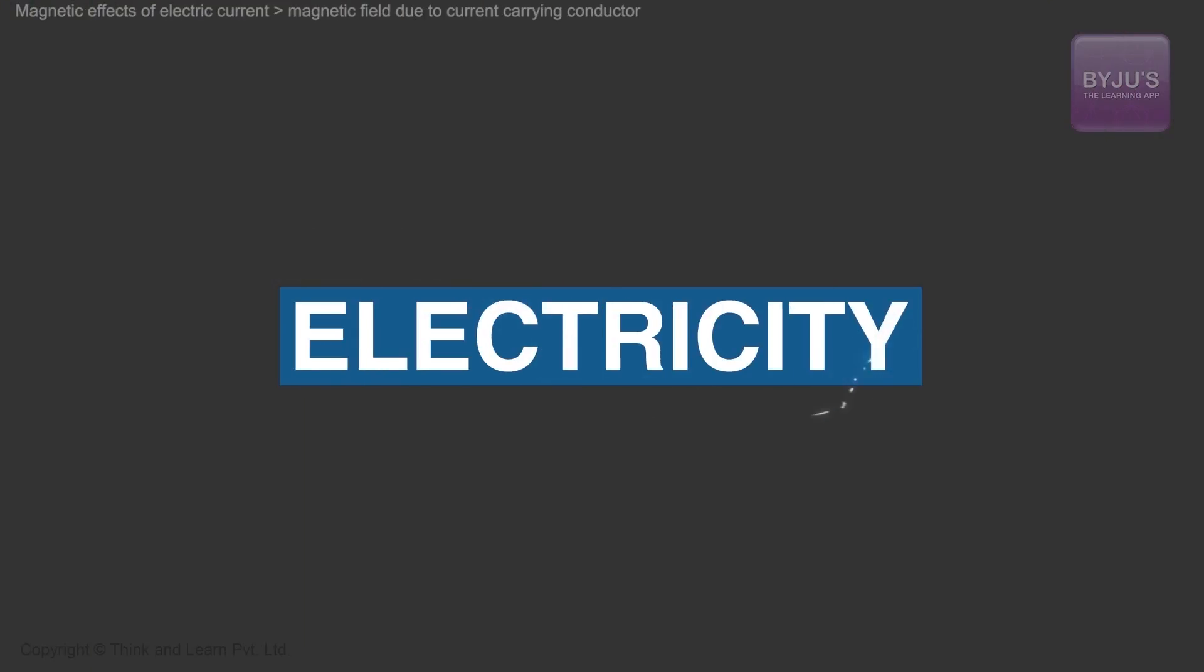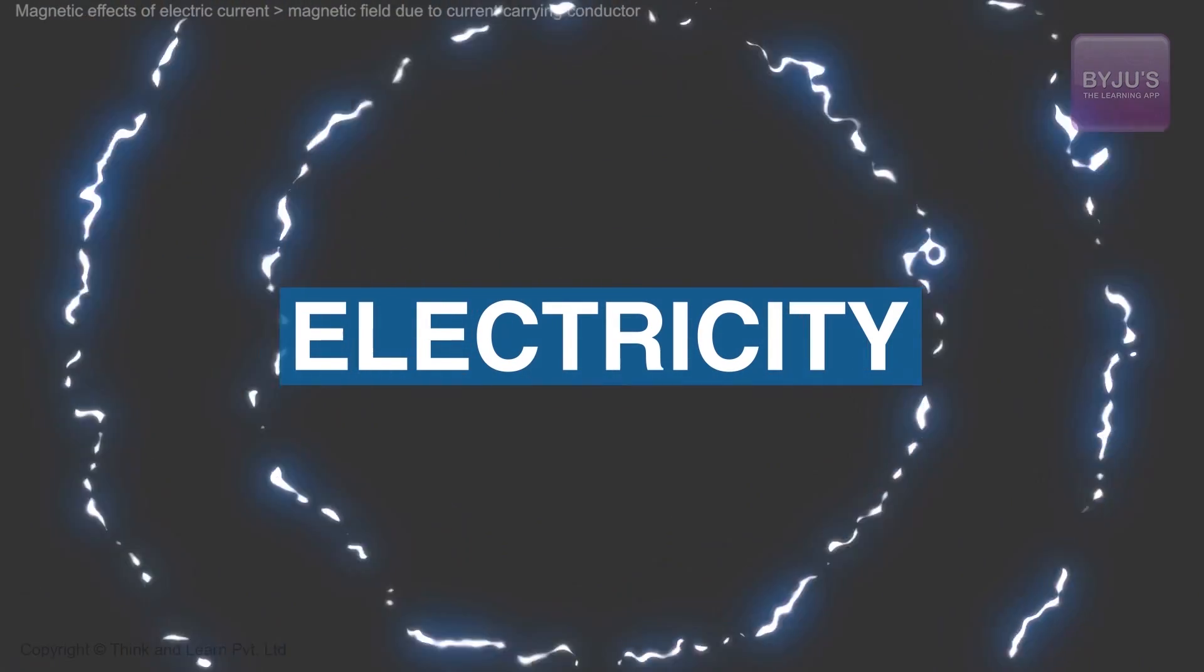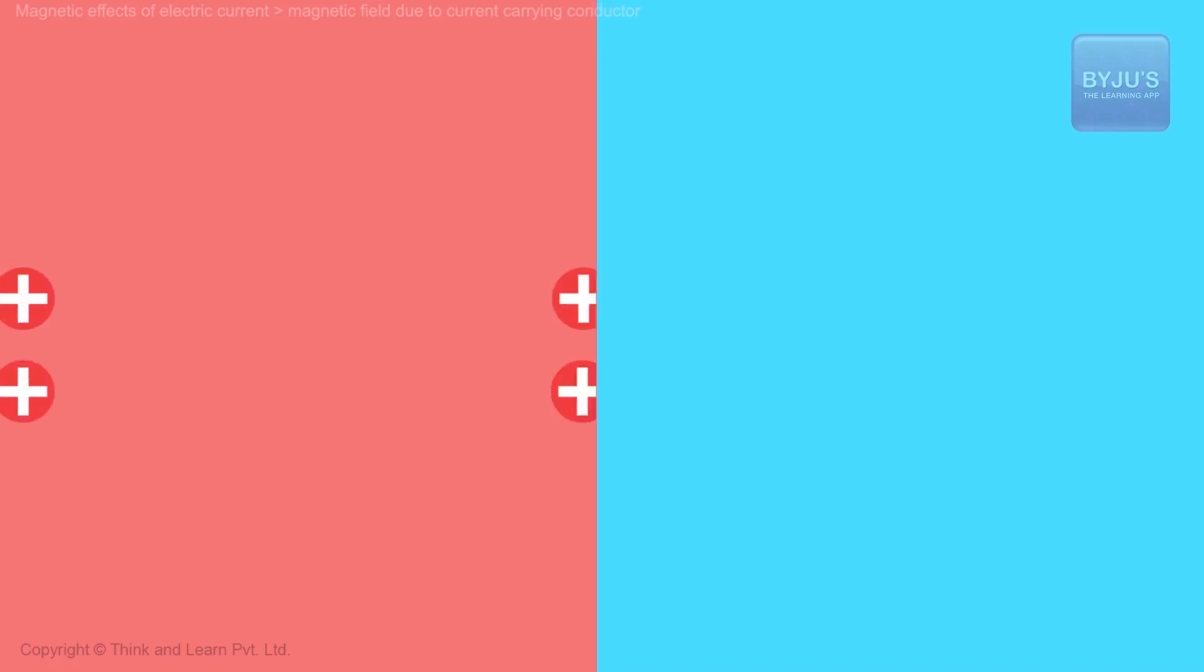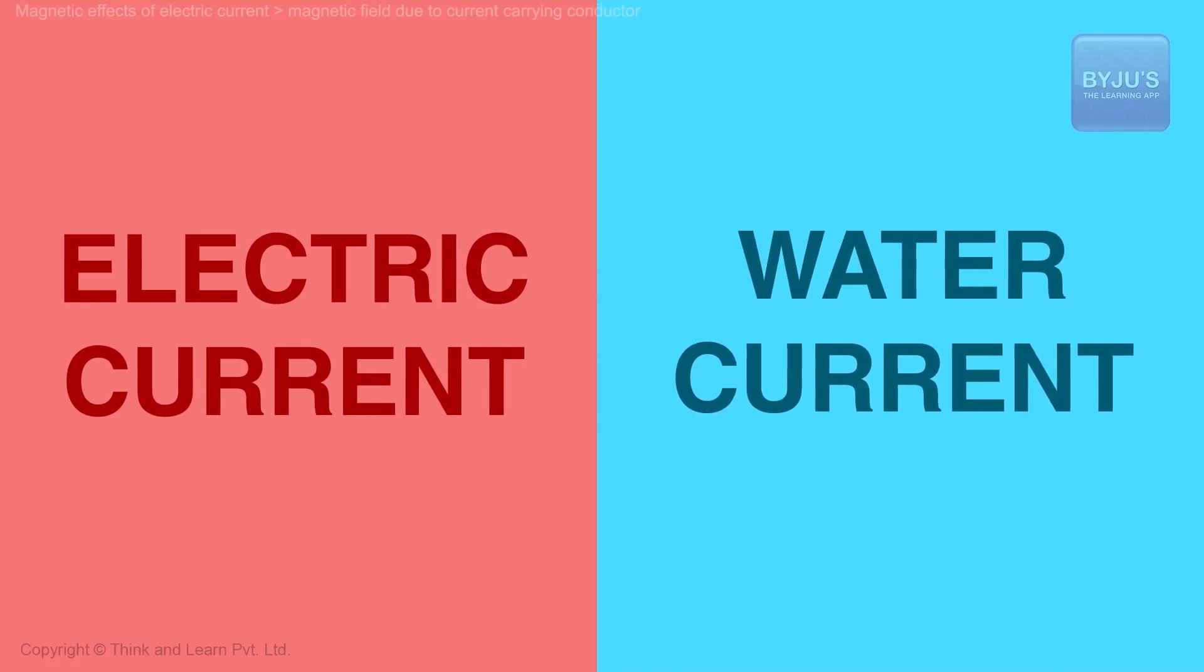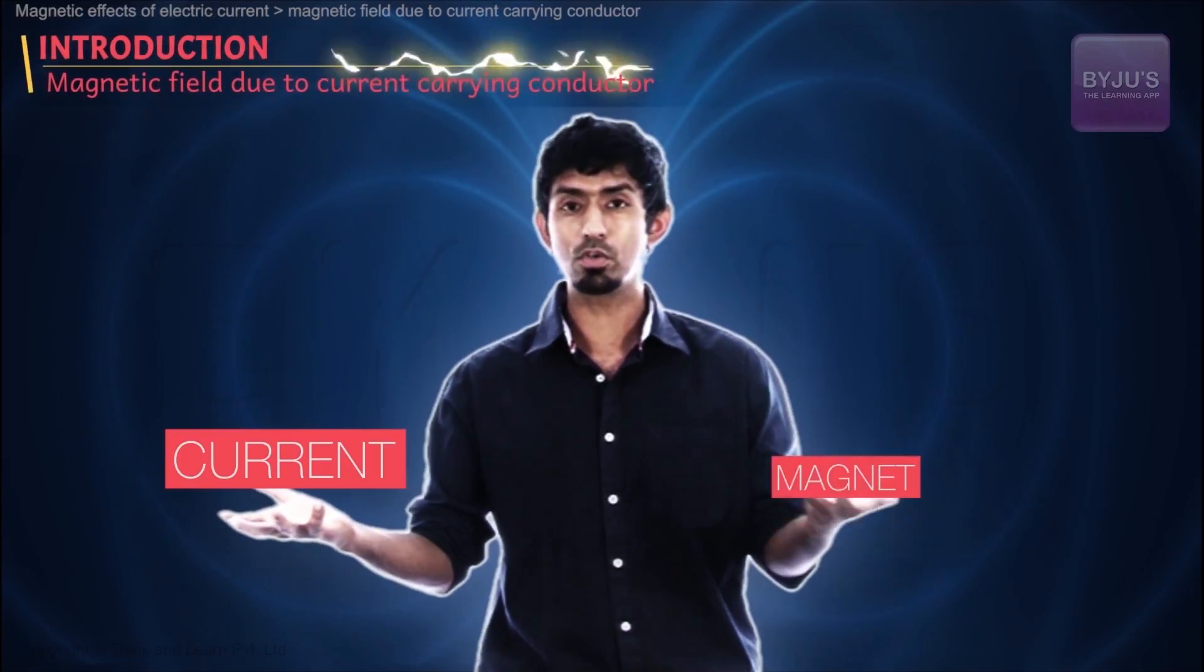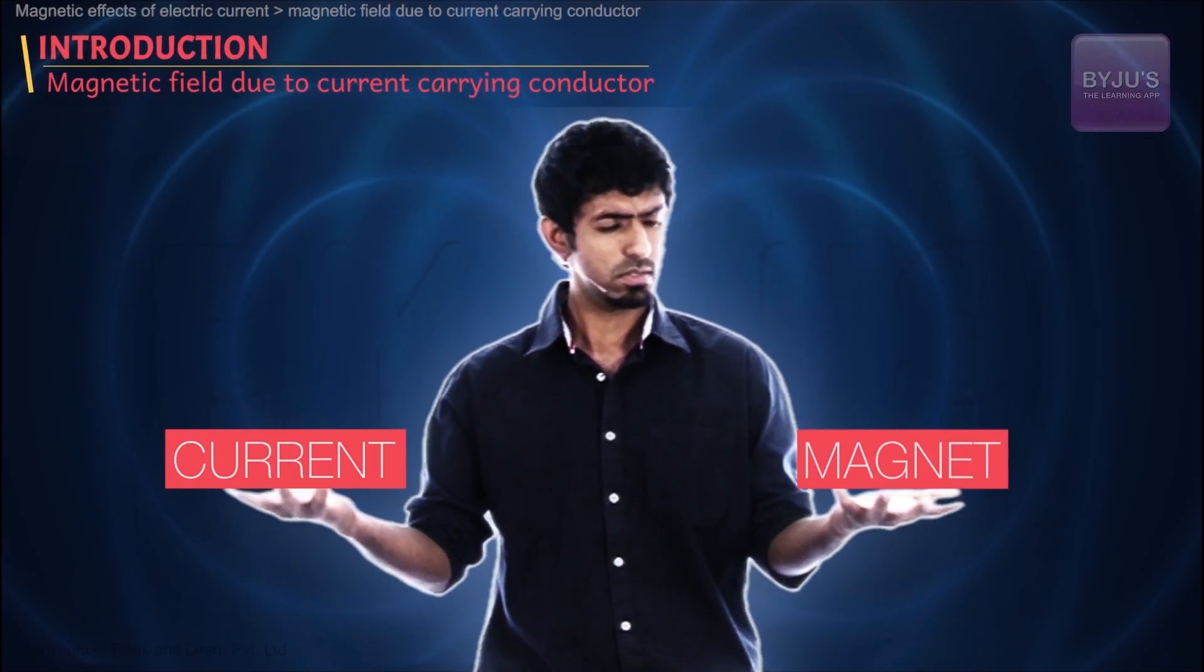And we also knew something called electricity, the mysterious electric fluid, which we discussed in the previous chapter, called current electricity. Just like charges flow, we call it electric current, just like when water flows, we call it water current. So we know current separately and we know magnets separately, not so connected.